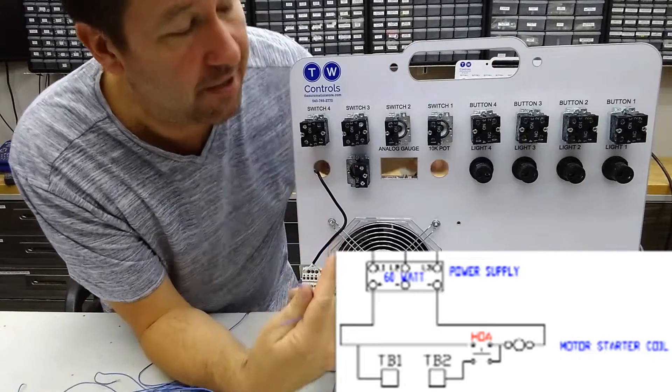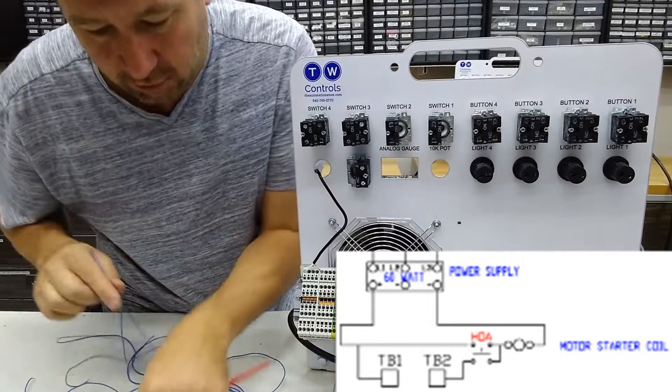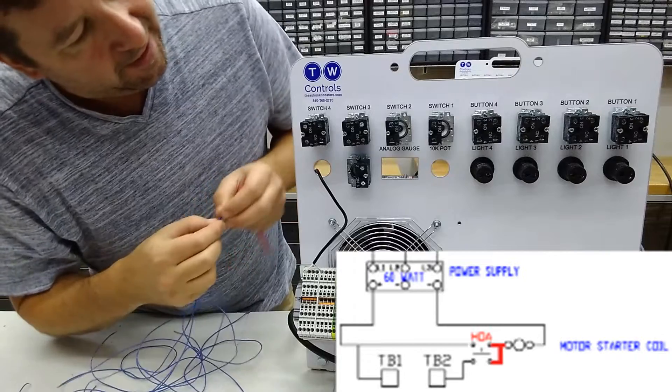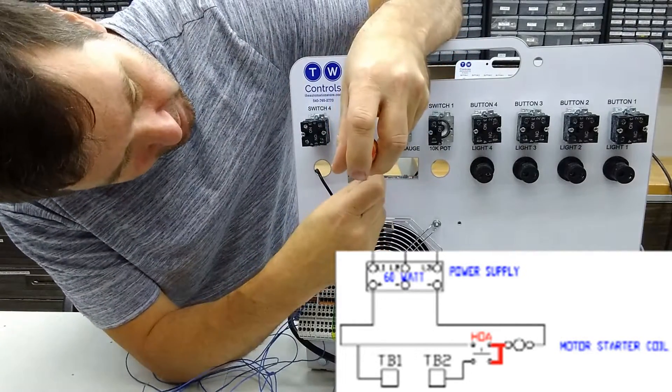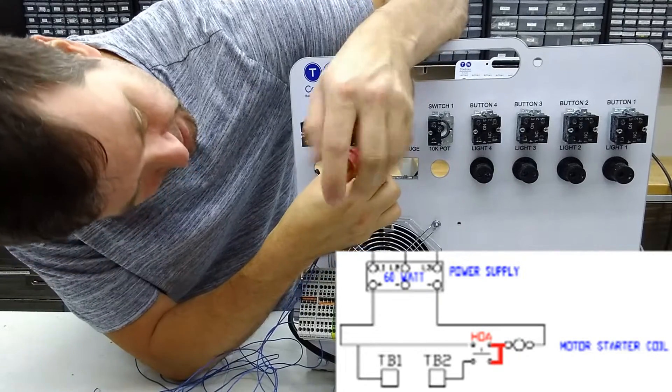So we're going to use this wiring diagram, which again is one of our standard control panel wiring diagrams. And we're going to start by connecting a jumper across the bottom contacts of this switch. They're both normally open contacts.